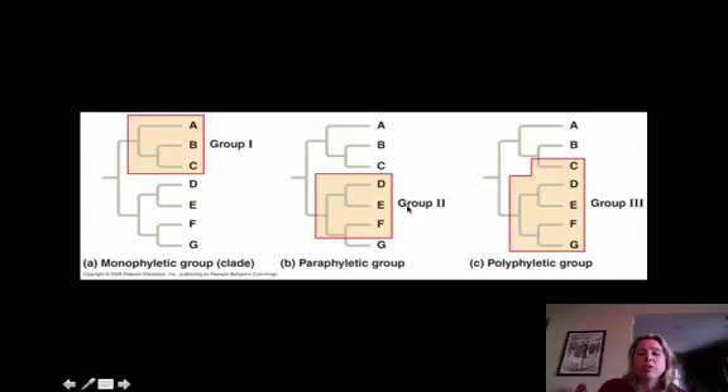Now if we look over here, D, E, and F, that's going to be called a paraphyletic group. And the reason is because we're talking about an ancestor and some but not all of its descendants, right? So we've left out G when we're talking about this group, so we call that a paraphyletic group.